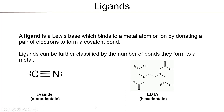For instance, cyanide, CN⁻, is an example of a ligand and a Lewis base, because there are lone pairs on the carbon and the nitrogen, either of which can be donated into empty orbitals on the metal center and form a covalent bond with a metal. EDTA, as we're going to see, is also a ligand, where we have lone pairs on the oxygen atoms and lone pairs on the nitrogen atoms that can be donated to a metal or metal ion and form covalent bonds.